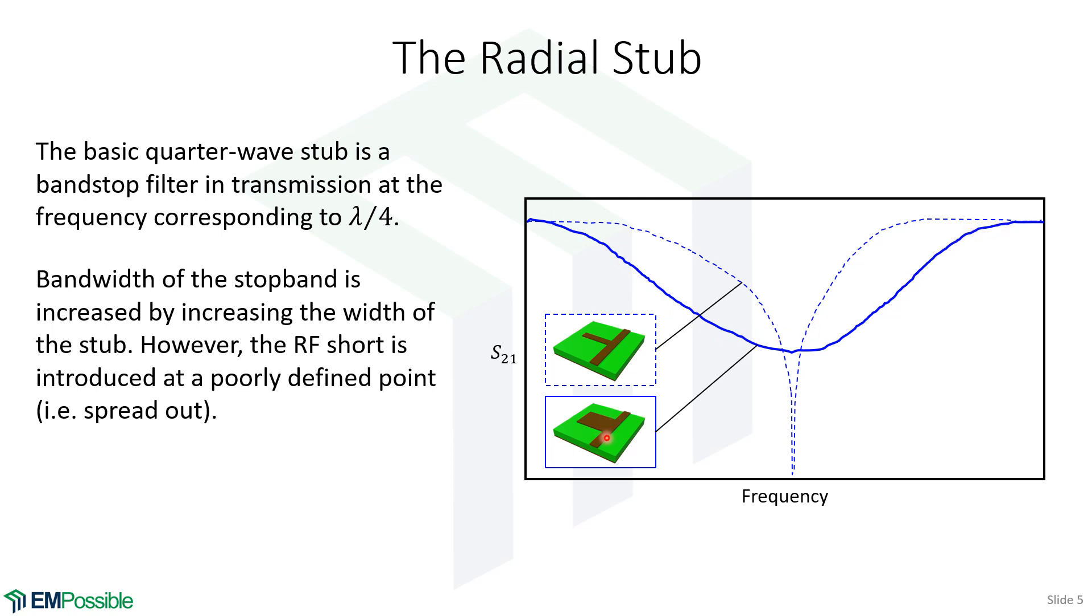However, that point on the transmission line where the short circuit occurs has now been spread out, and it's distributed, and that effectively blurs this small band of transmission or reflection, depending where we're looking at that.